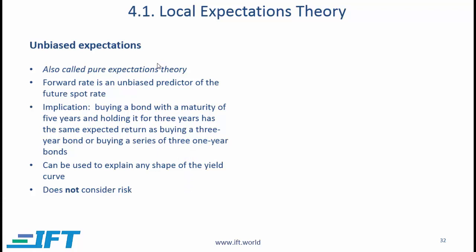Let's start with the unbiased expectations theory. This is the most basic and perhaps the original theory that tried to explain the term structure of interest rates and the shape of the yield curve. This theory is also called the pure expectations theory. The primary point is this: according to this theory, the forward rate is an unbiased predictor of the future spot rate.